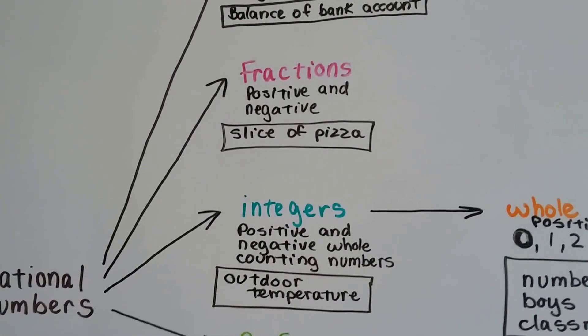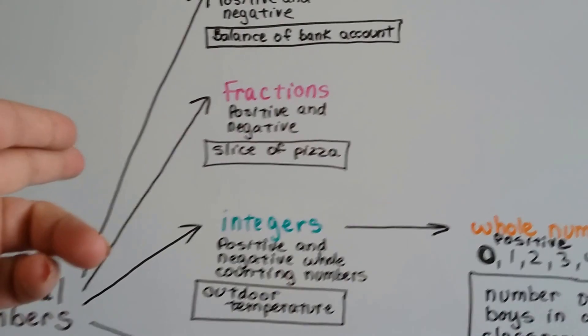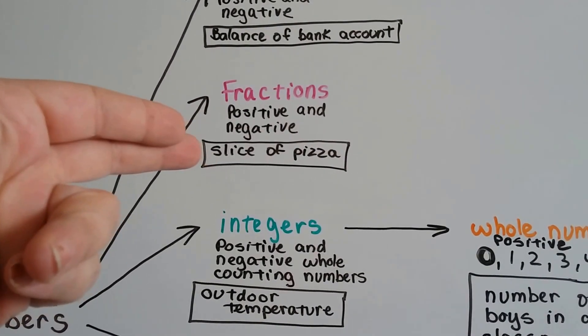Fractions, those are in the rational family. Positive or negative, it would be a slice of a pizza. It's one eighth of a pizza.